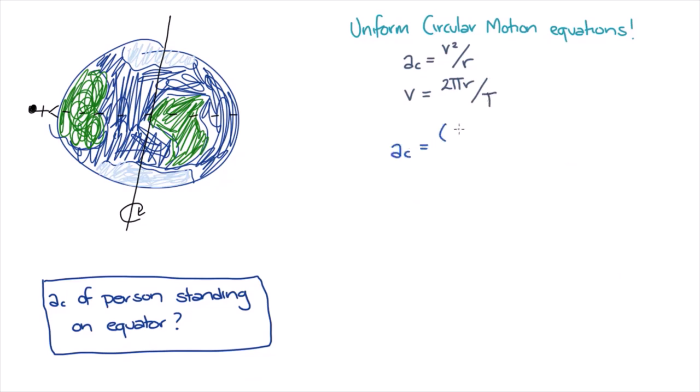If we substitute in our expression for the speed into our expression for acceleration, we find that the centripetal acceleration is 4π²r over T squared.